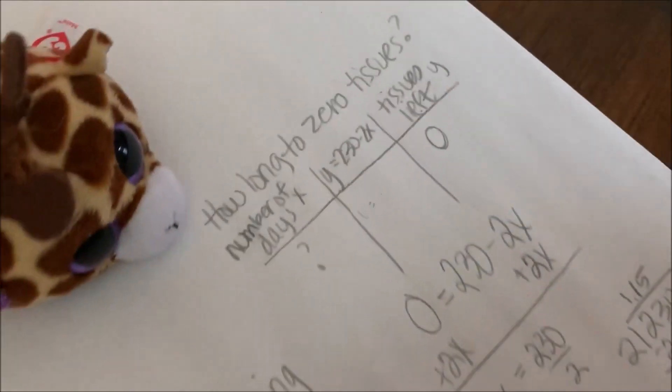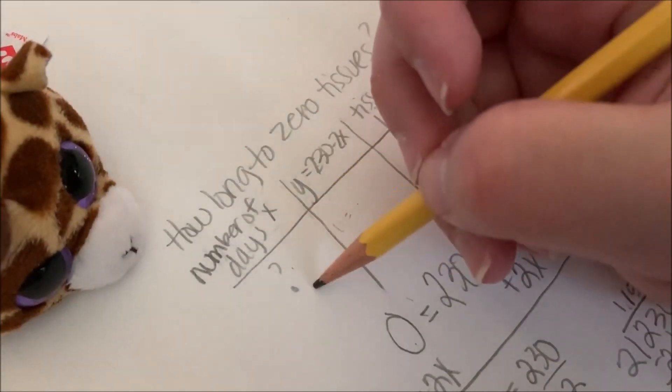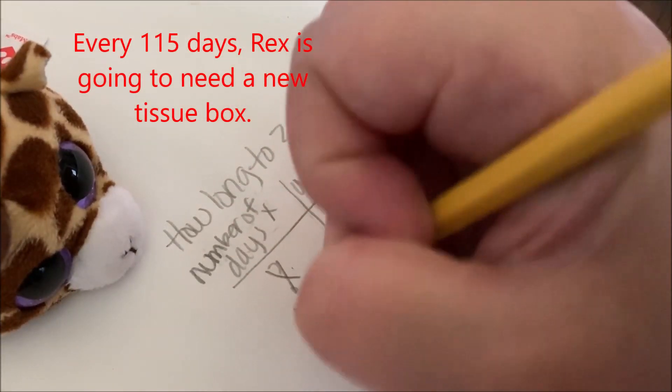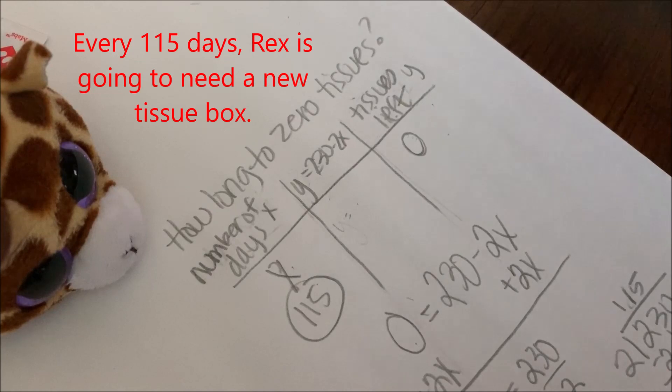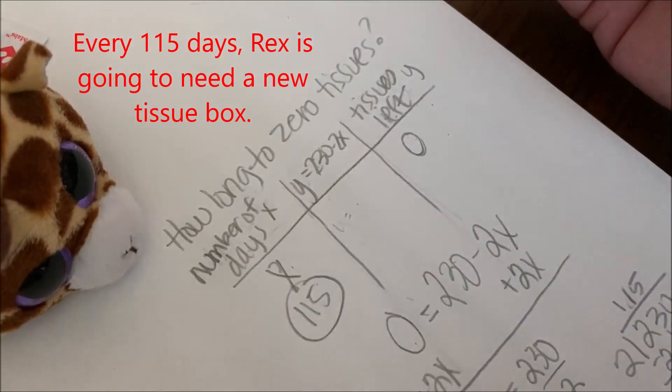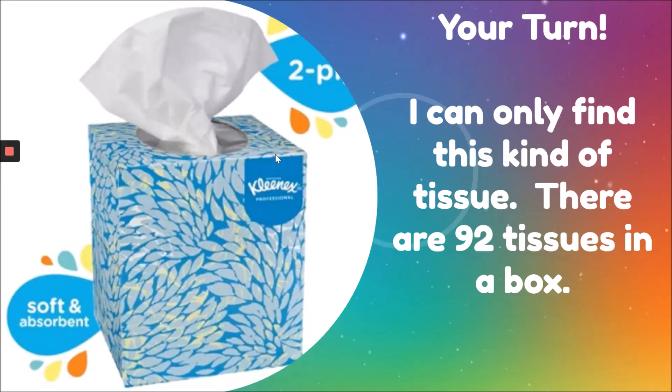So let's go back up to my table. How many days would it take to have zero tissues left? 115 days. So every 115 days, Rex is going to need a new tissue box.